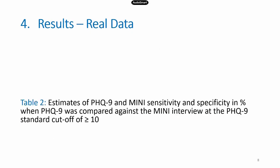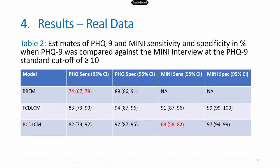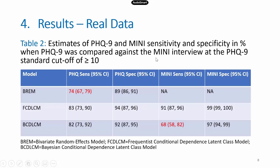We also fitted the models to a real dataset from our PHQ-9 database, where the PHQ-9 was compared against the Mini reference standard at the standard cutoff of 10. Consistent with the simulation study, the bivariate random effects model yielded a much smaller PHQ-9 sensitivity, while PHQ-9 specificity was similar across models. The Bayesian conditional dependence latent class model again showed a much smaller sensitivity estimate for the Mini — in line with our simulation findings. Otherwise, the Mini appears highly specific, almost perfect, but with the frequentist conditional dependence latent class model its sensitivity is estimated at approximately 90%, suggesting it is imperfect.